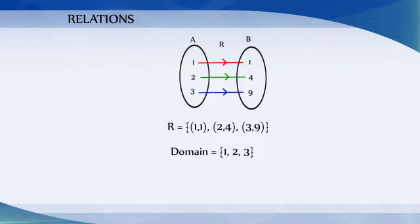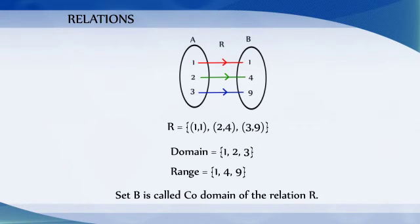Similarly, the set of all second elements of the ordered pairs in a relation R is known as range of the relation R. And the set B is called co-domain of the relation R.